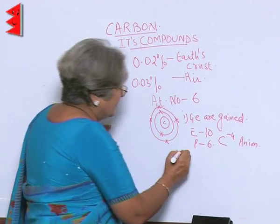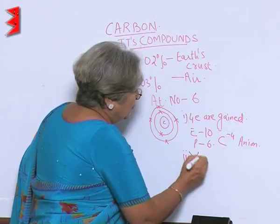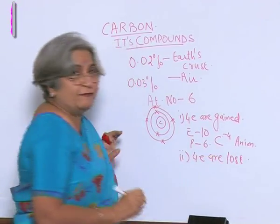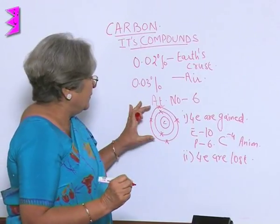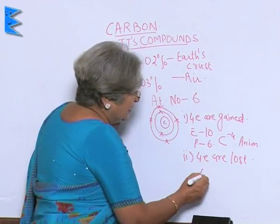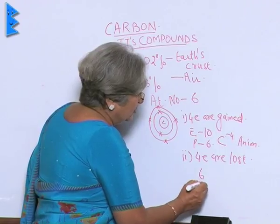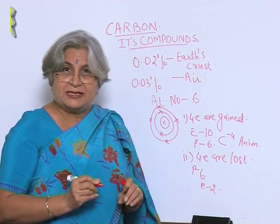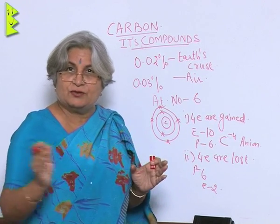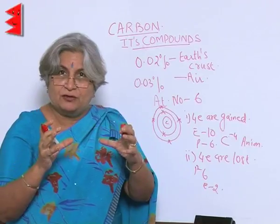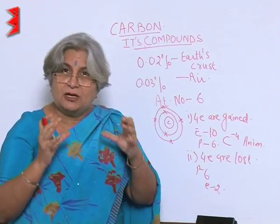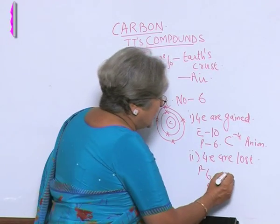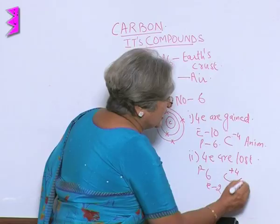What is the second situation? 4 electrons are lost. If 4 electrons are lost, then protons will be 6 and electrons will be 2. To allow those electrons to move away from the effect of the nucleus with 6 protons, a lot of energy will be required. If it happens, carbon will become C⁴⁺, a cation.